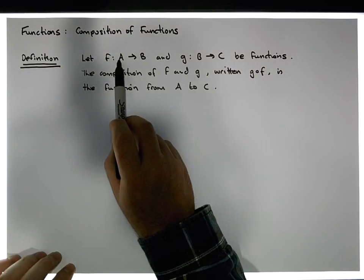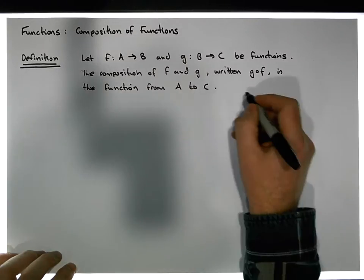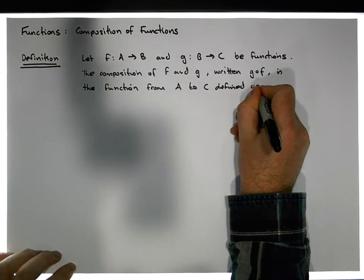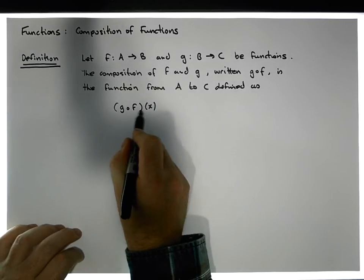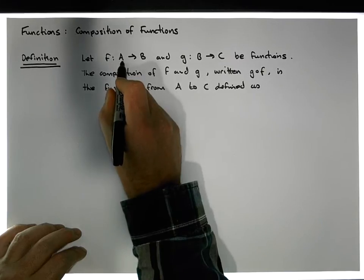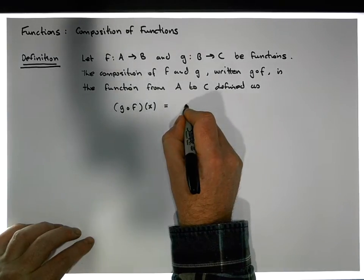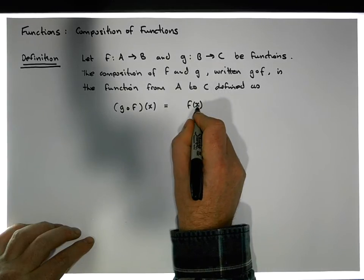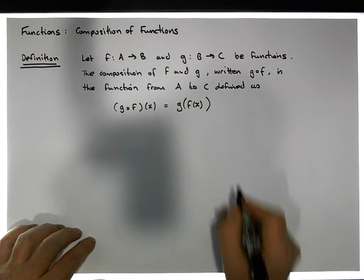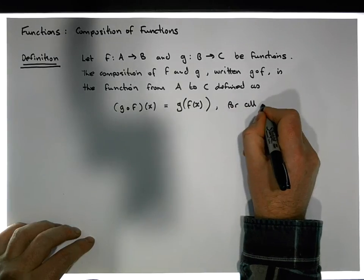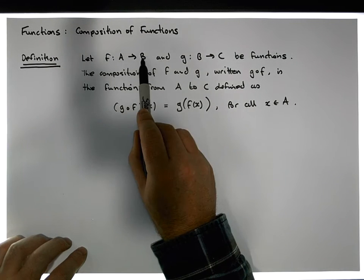Every value of A is taken to some value in C, and what we end up with is a function from A to C. It's defined as: g∘f of x — this is the notation — is equal to g applied to f(x). So first we apply f to x, evaluate f(x), then pass that value into g and apply g to it. This holds for all x that are elements of the set A.